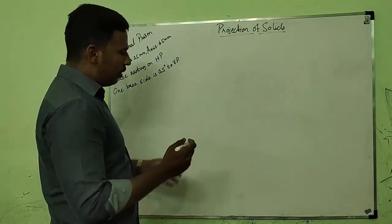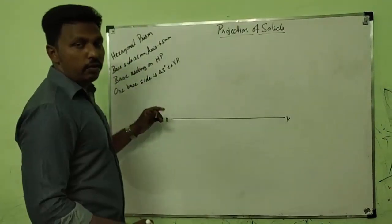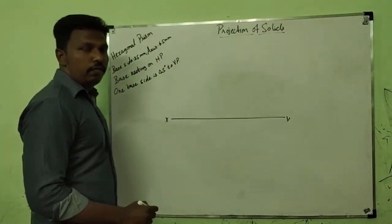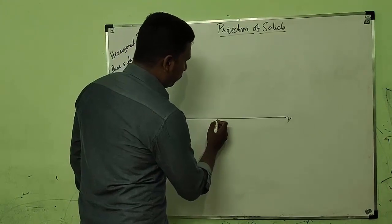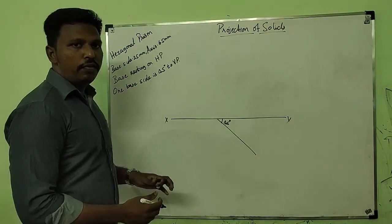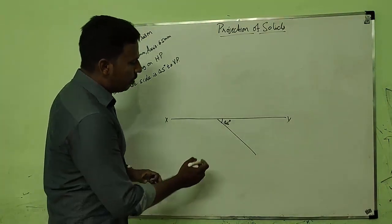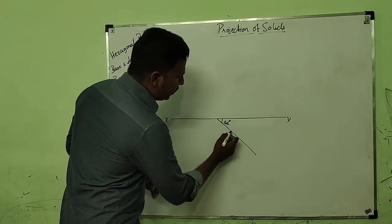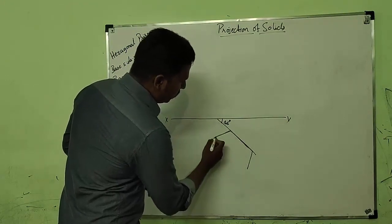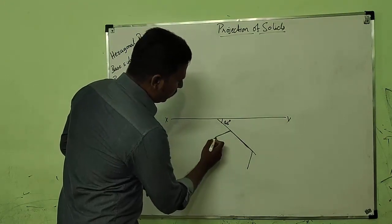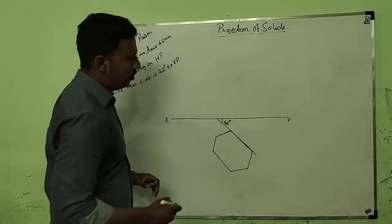Let us draw the XY line. First of all, we have to draw the 45 degree line, because the base is inclined at 45 degrees to VP. With that condition we have to draw the solid.